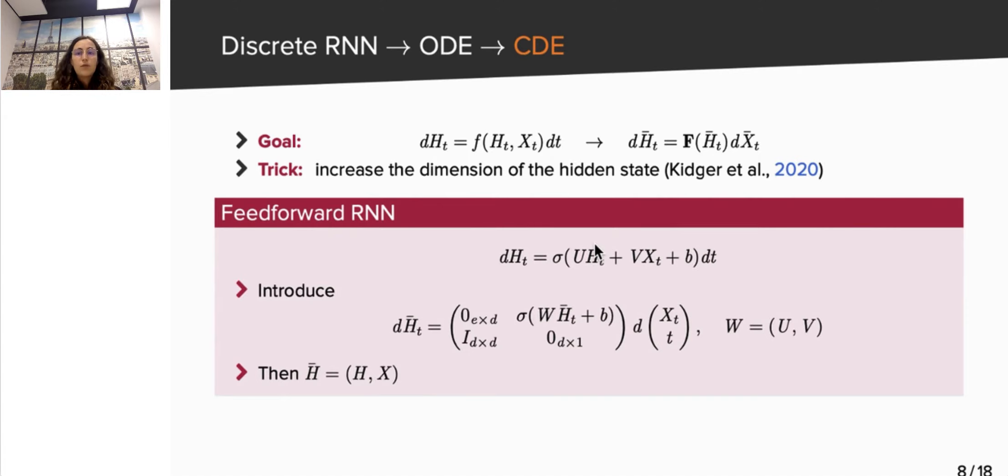To set these ideas on an example, let's look at the case of a feedforward RNN. A possible choice for a function bold F is then the block matrix with diagonal 0, identity matrix in the bottom left block, and a slight modification of the layer equation in the top right block. Then, it is straightforward to show that this CDE has a unique solution, h bar, and that the projection of h bar in its first coordinates is equal to the solution of the feedforward ODE. The last coordinates of h bar are simply equal to X.